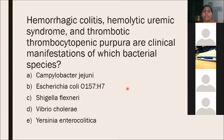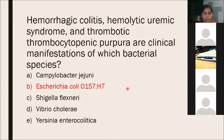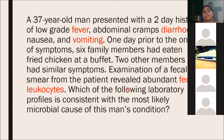Hemorrhagic colitis, hemolytic uremic syndrome, and thrombocytopenic purpura are clinical manifestations associated with EHEC (O157:H7). Shigella flexneri is more associated with diarrhea than dysentery, so EHEC is preferred over Shigella here.